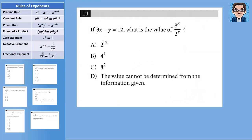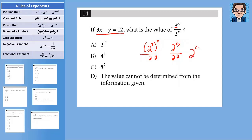The fourth problem gives us 3x minus y equals 12, and we're trying to find the value of 8 to the x over 2 to the y. The key is to have the same base. We change 8 into 2 to the 3rd. So we get 2 to the 3rd to the x over 2 to the y. Multiplying when raising to a power gives 2 to the 3x over 2 to the y. Dividing means we subtract exponents, giving 2 to the 3x minus y. Since 3x minus y equals 12, the answer is 2 to the 12th.